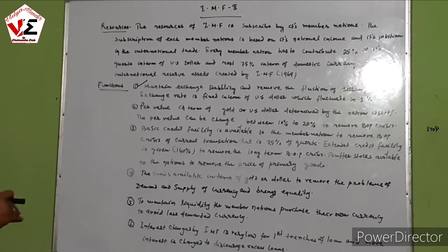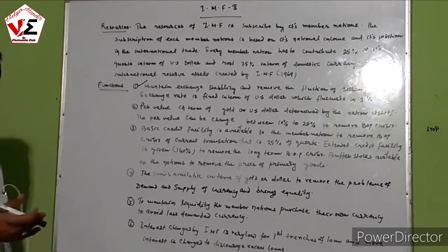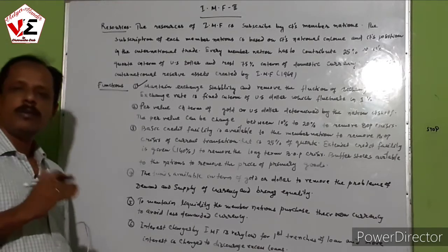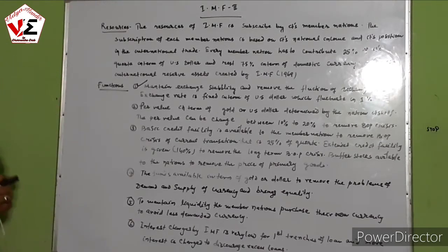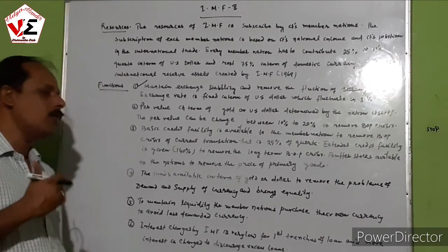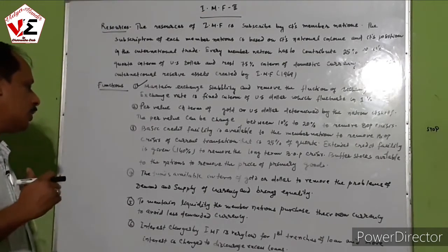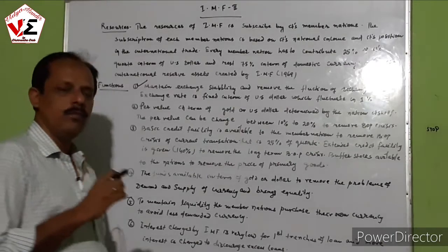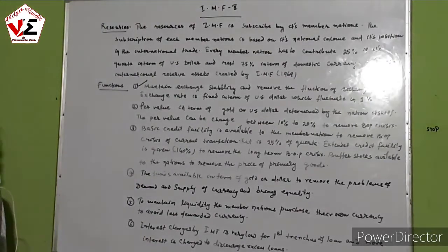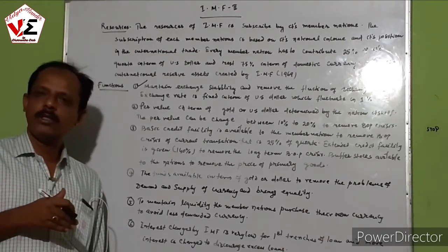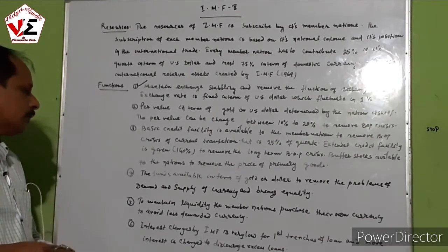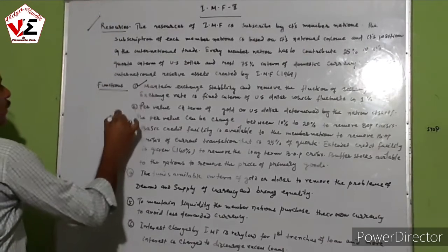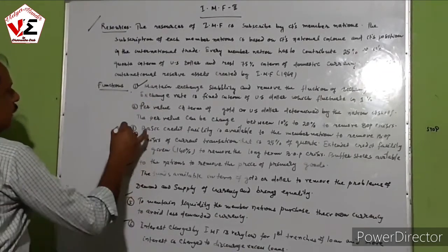The resources of IMF are generated by member nations — 25% in terms of gold or US dollar, and 75% deposited in the central bank of the nation in terms of domestic currency. The main function of IMF is to remove the balance of payment crisis and bring equality in the demand and supply of money. Currency depreciation and appreciation are allowed to some extent, and par value rights are given by the IMF. IMF is the foremost organization to provide liquidity to nations and gives loans to member nations to solve international crises. These are the six functions of IMF.